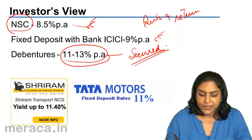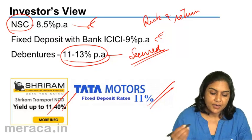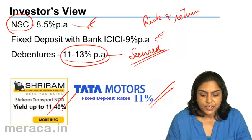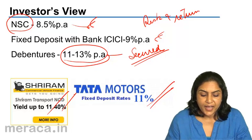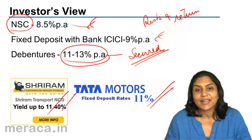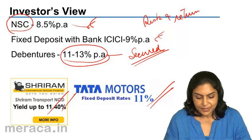Several companies issue debentures and they have yields from anything between 11% to 30%.